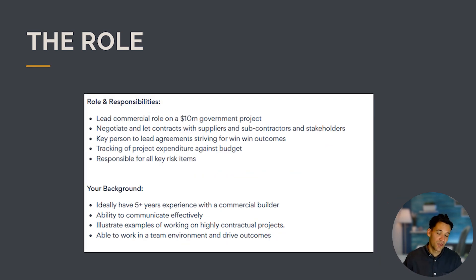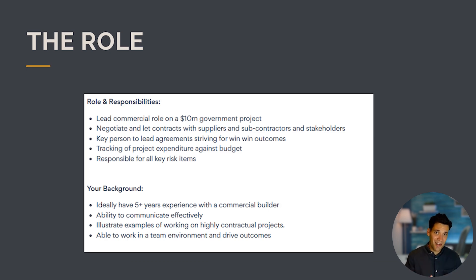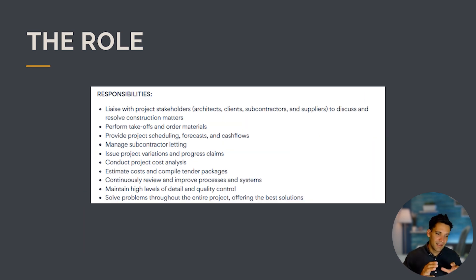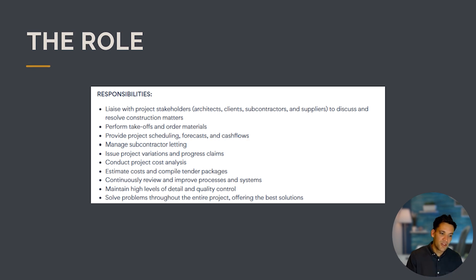Another contract administration job role is about being the lead commercial role, which means understanding the agreements and helping to administer contracts, but also understanding and tracking expenditure and being responsible for key risk items. A third example covers liaising with project stakeholders, performing takeoffs and ordering materials, providing project scheduling, forecasts and cash flow, issuing variations, managing progress claims from subcontractors, and managing subcontractor letting — which is another way of saying procurement.